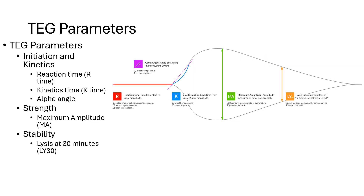TEG parameters one must be familiar with in order to interpret and act on an abnormal TEG. First is the R time, or reaction time — this is the time from initiation of the test until initial fibrin formation begins. This phase is dependent on clotting factors and the presence of factor inhibitors. Next is the K time, or kinetics time — this is the time from initiation of clot formation until clot firmness reaches 20 mm. This phase is dependent on fibrin amplification and crosslinking as the thrombus begins to propagate, and is often called the thrombin or fibrin burst phase. Next is the alpha angle — this is the slope of the line imposed on the clot firmness graph between the end of the R time and the end of the K time.